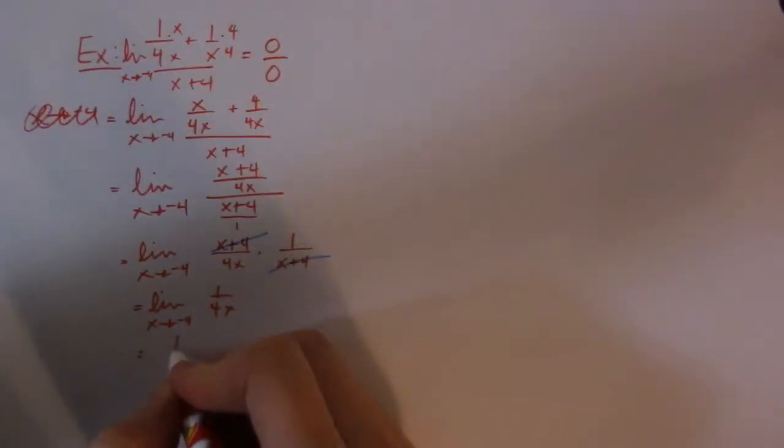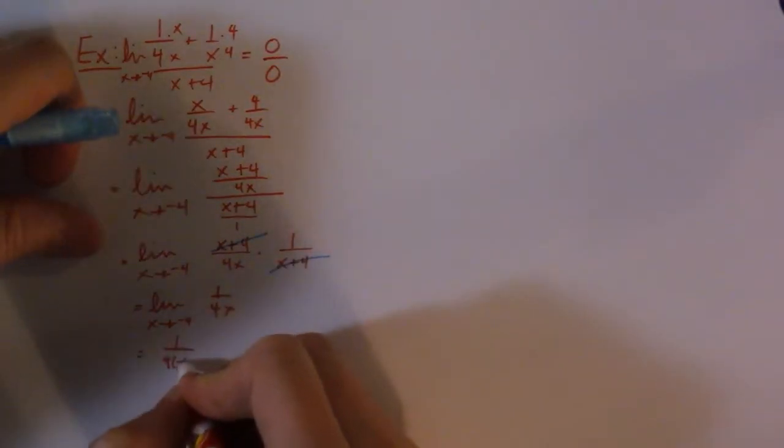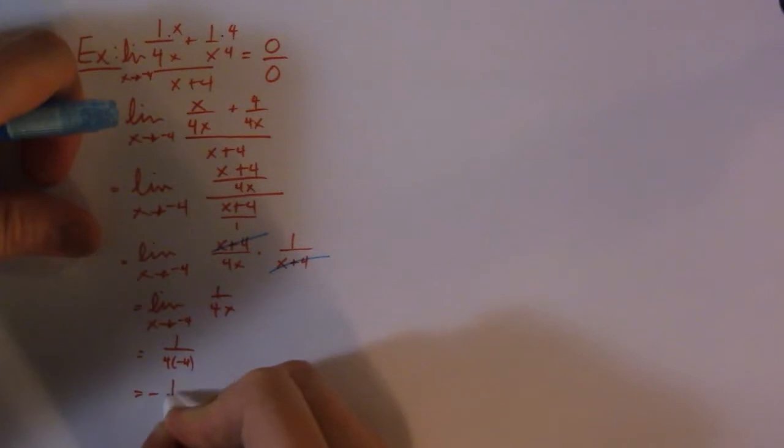Now I can evaluate my limit. So 1 over 4 times negative 4, that's negative 1 over 16.